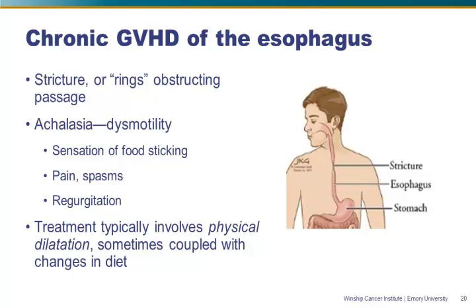For this type of graft-versus-host disease, there may be some minor immunosuppressive changes needed, but treatment is typically physical: dilatation of the esophagus through endoscopy using a series of dilators that literally physically break up the strictures so things can go down. It's also often necessary for people to change their diet and the consistency of food they eat so that it goes down more easily.